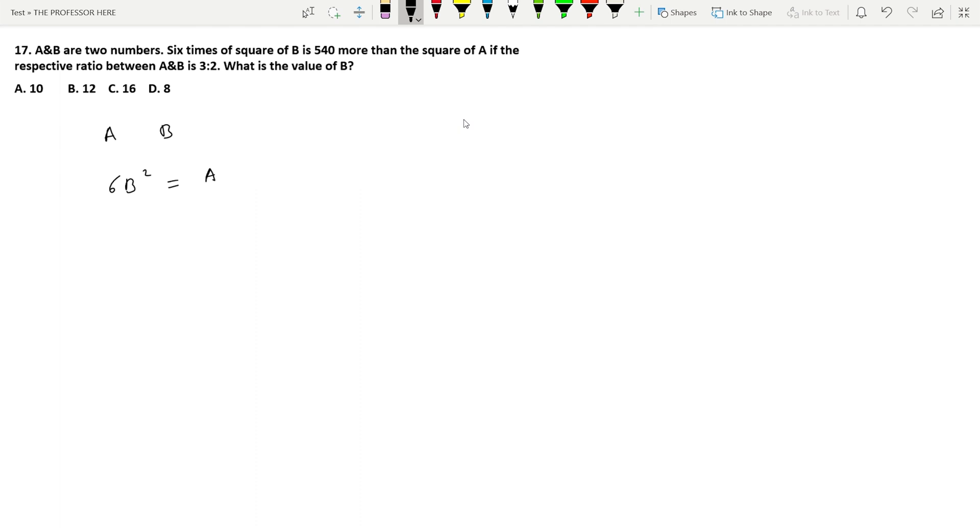So a² + 540 will give you 6b². We assume the numbers as a and b as per the question and then proceed to write this line into an equation: 6b² = a² + 540.